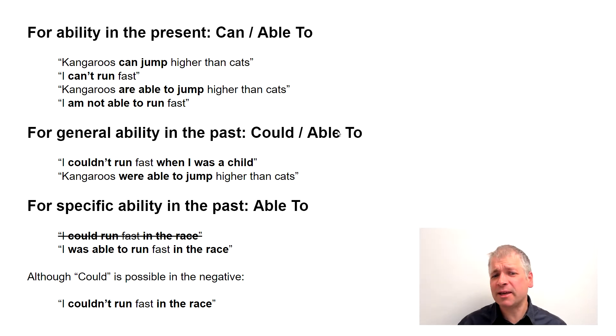If we're looking at ability in the past, we can use could or able to. I couldn't run fast when I was a child.